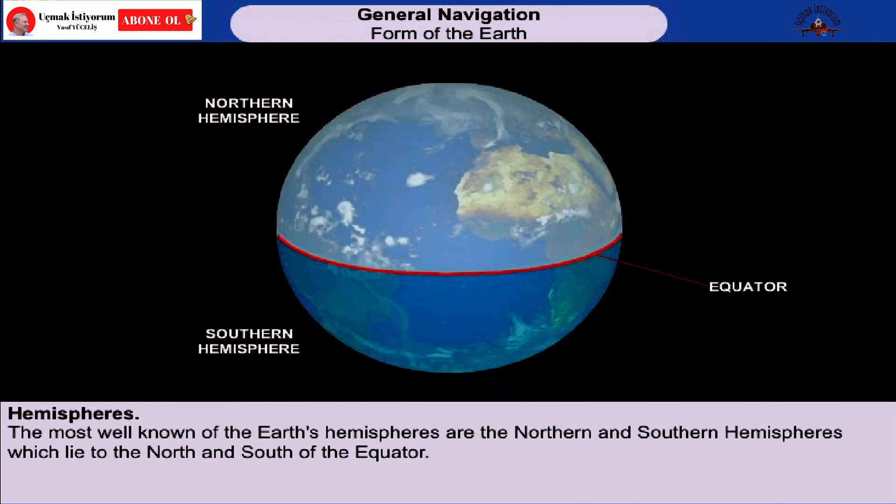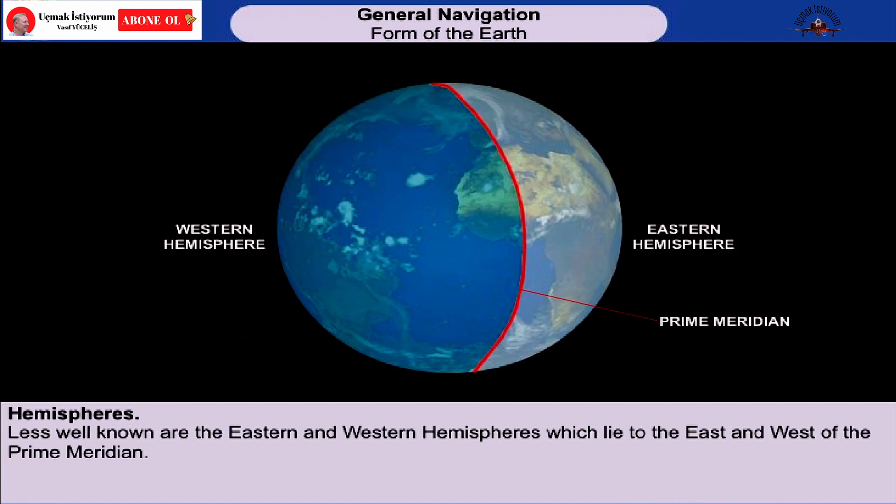The Earth is divided into hemispheres. The most well-known ones are the northern and southern hemispheres, which lie north and south of the equator. Less well-known are the eastern and western hemispheres, which lie east and west of the prime meridian.